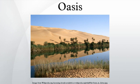In geography, an oasis is an isolated area of vegetation in a desert, typically surrounding a spring or similar water source. Oases also provide habitat for animals and even humans if the area is big enough.